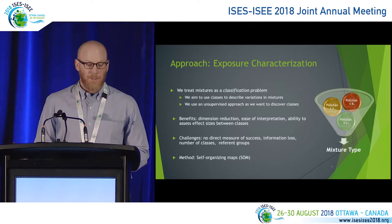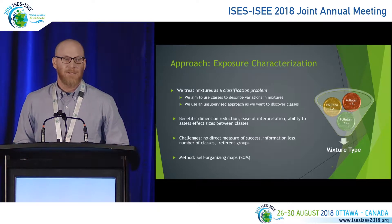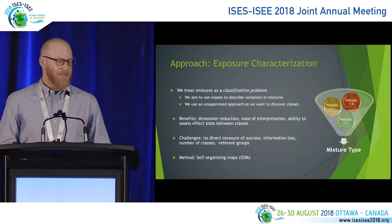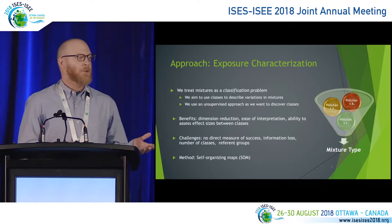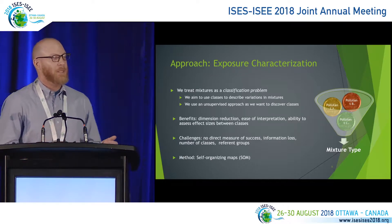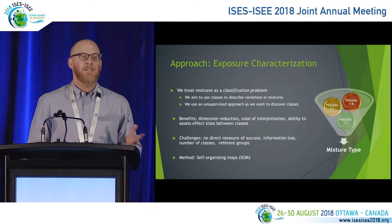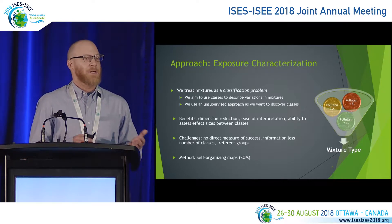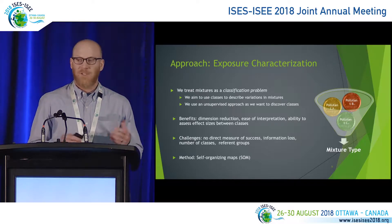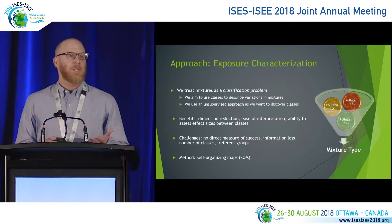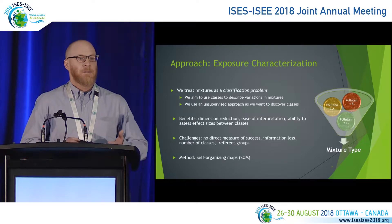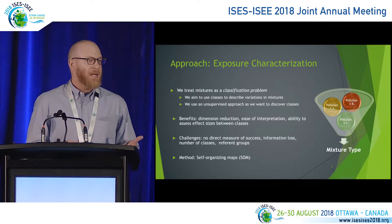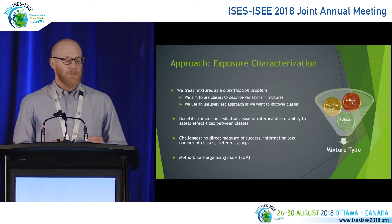There are some challenges, in particular for unsupervised learning — there tends not to be a direct measure of success. As with any dimension reduction approach, information loss is a big concern. Choosing an appropriate number of classes can also be challenging. And then determining referent groups: how do we base our exposure comparisons? There may be situations when all pollutants are low and there's an obvious referent group, but there may also be situations where pollutants are high on almost all of your classes, making a reference difficult to identify.